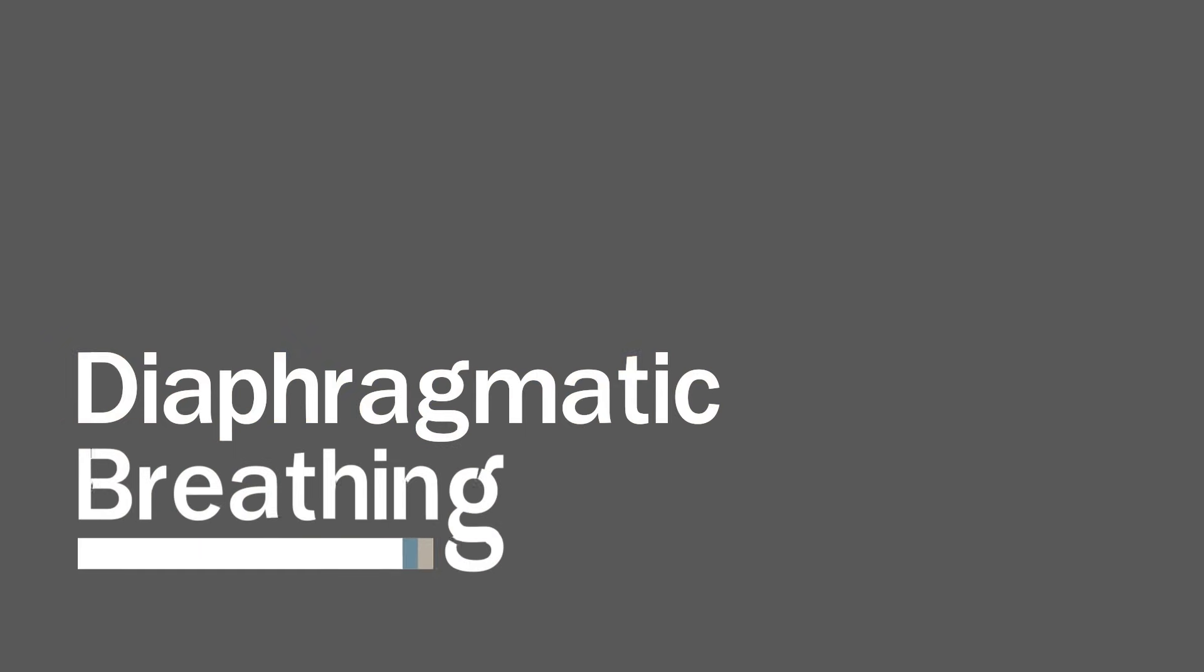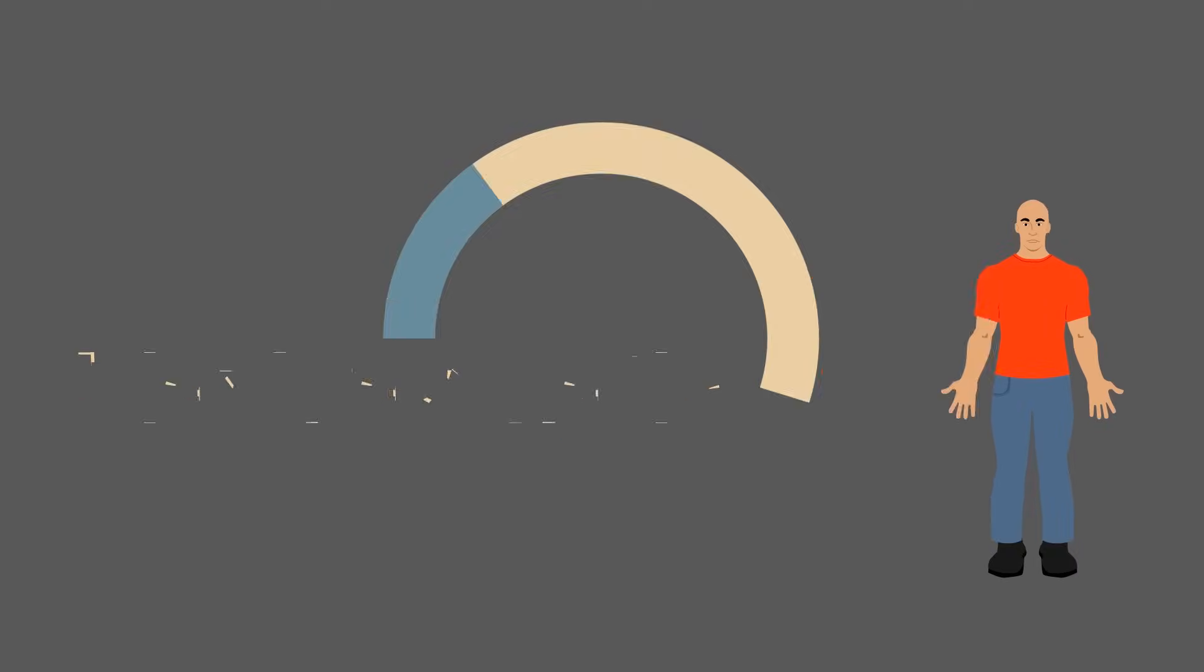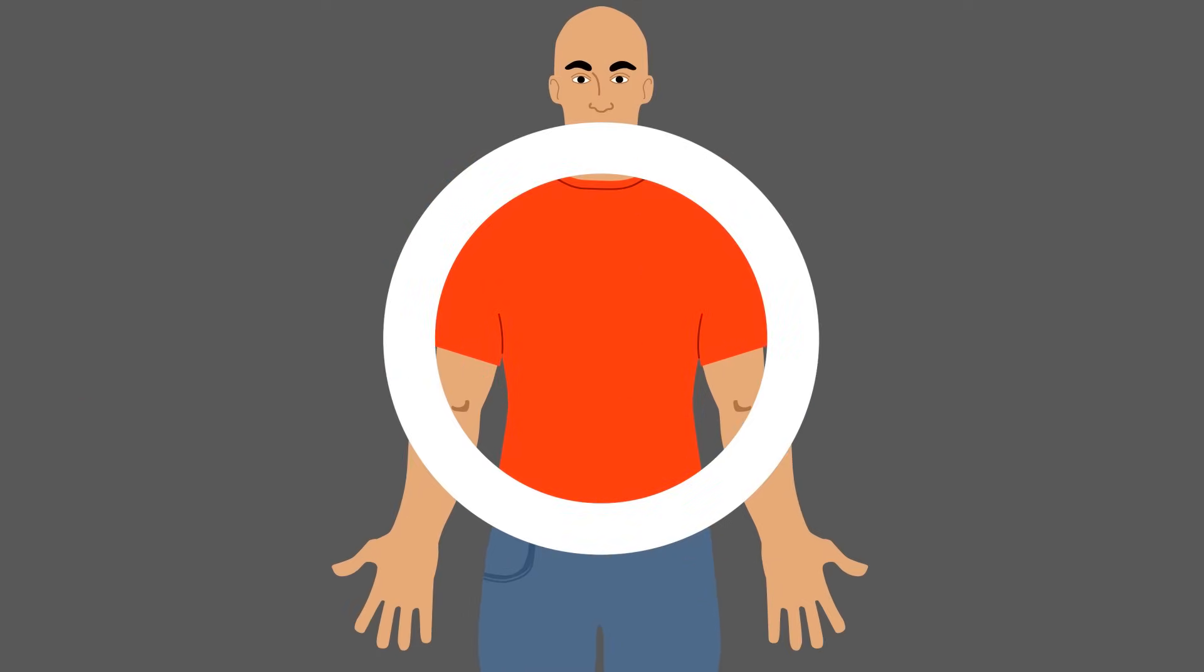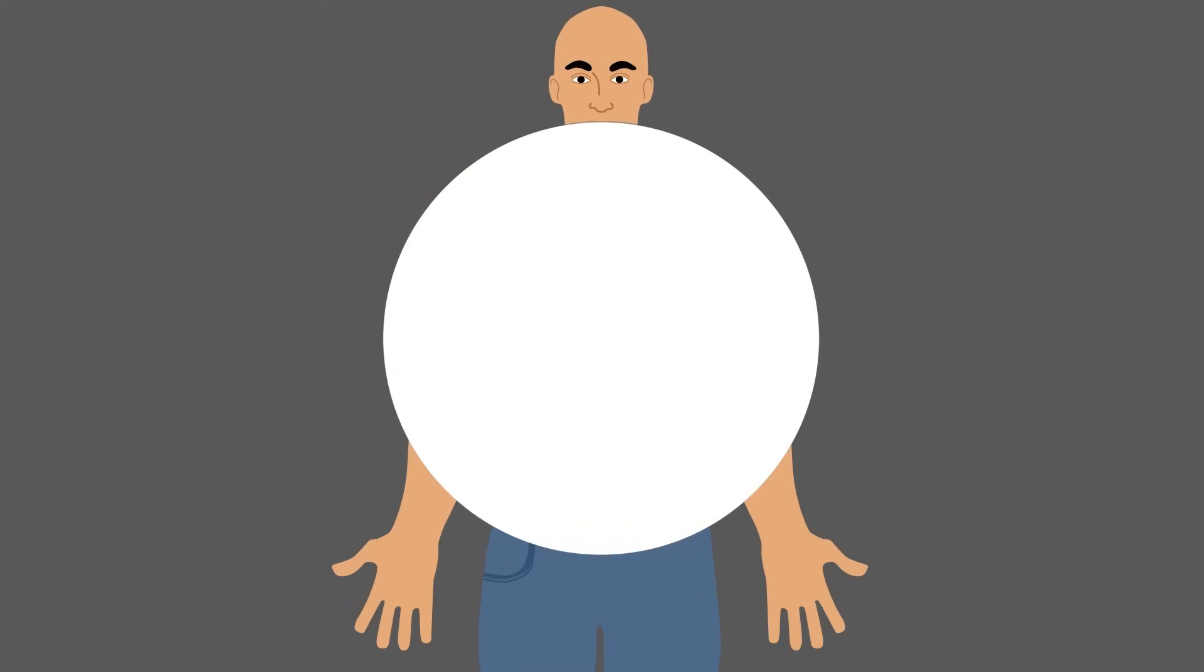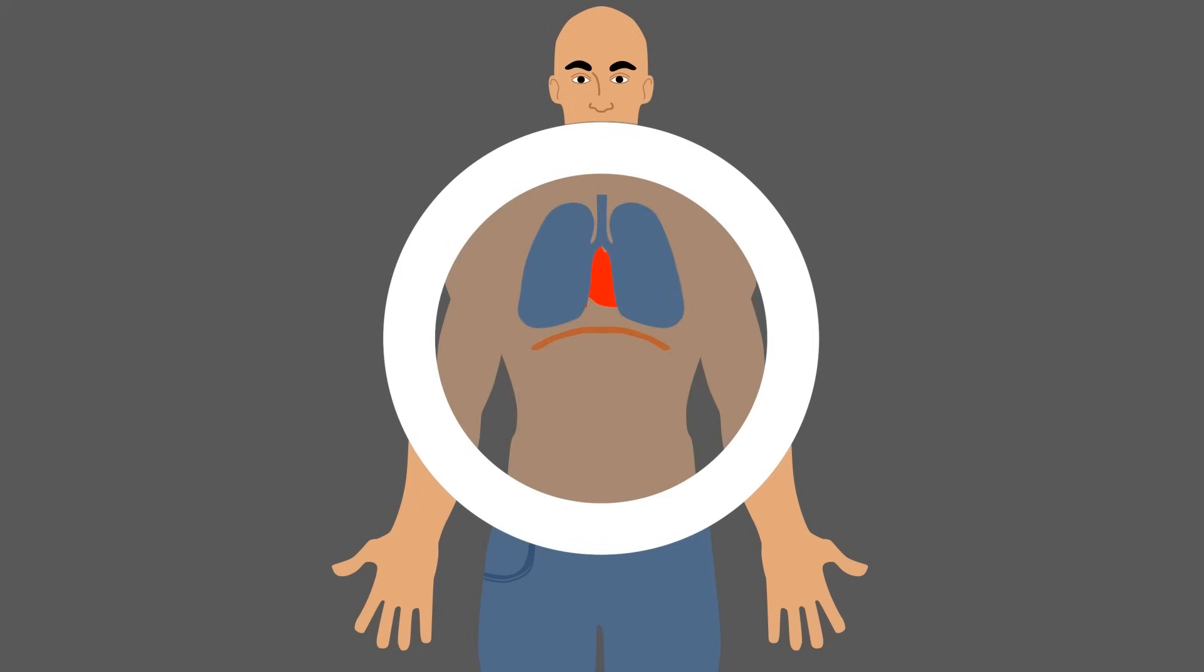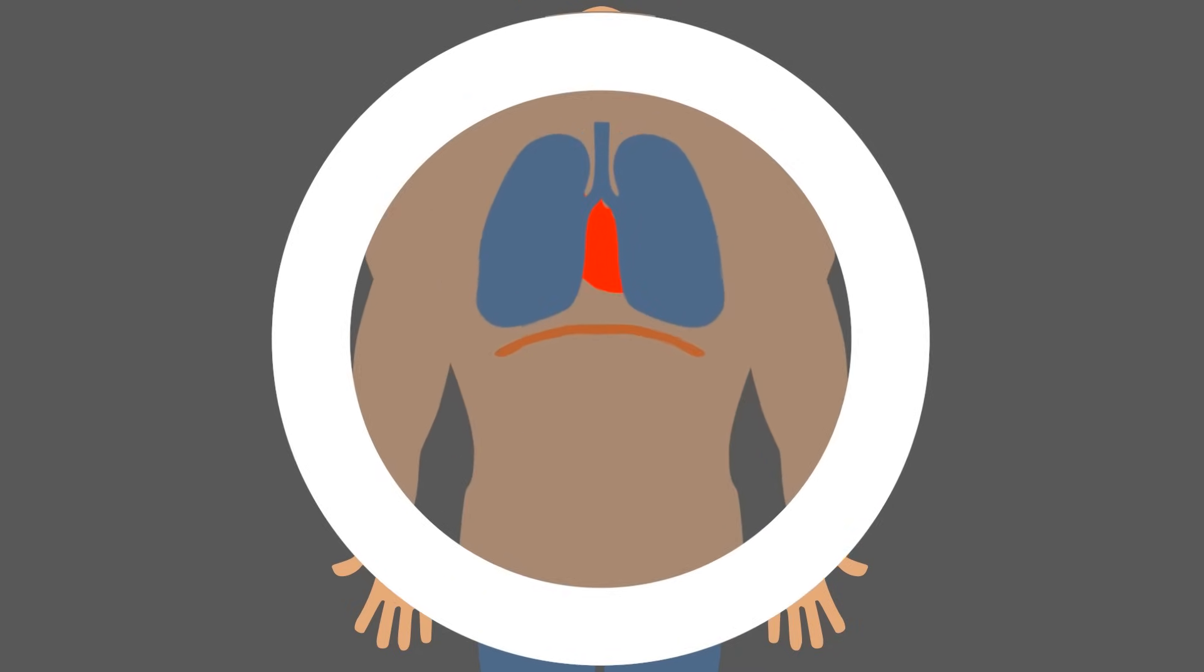Diaphragmatic breathing or belly breathing. The diaphragm is the most efficient muscle of breathing. It is a large dome-shaped muscle located at the base of the lungs. Your abdominal muscles help move the diaphragm and give you more power to empty your lungs.